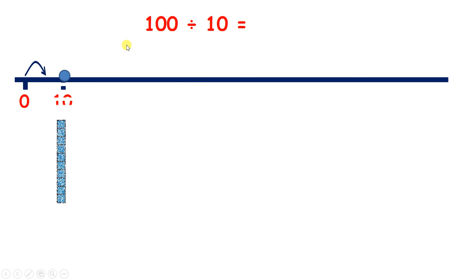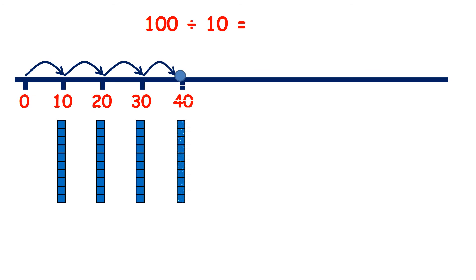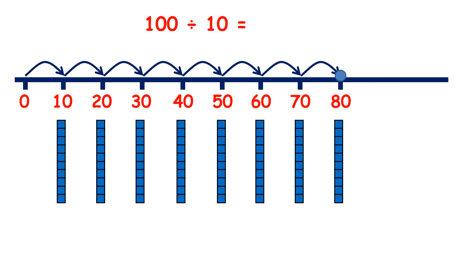But if we count up on our number line: 10, 20, 30, 40, 50, 60, 70, 80, 90, 100, so we have 10 tens. So 100 divided by 10 is 10.